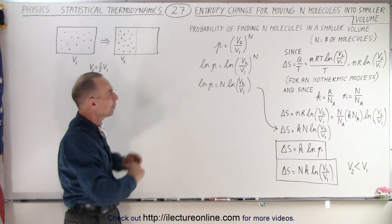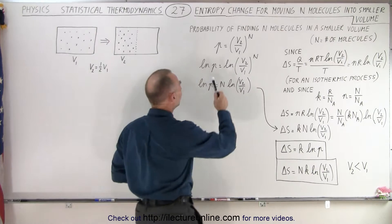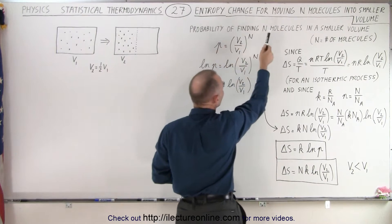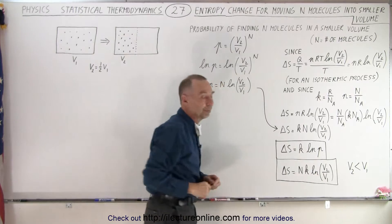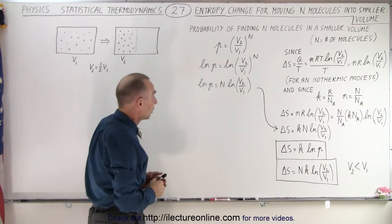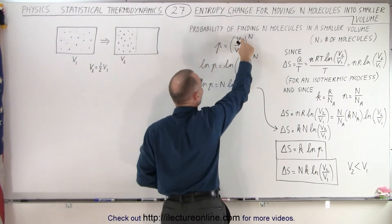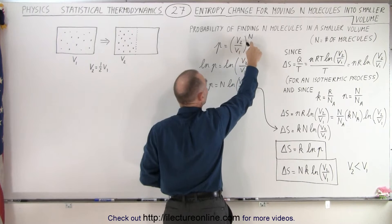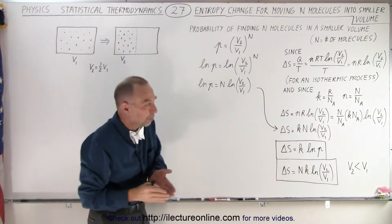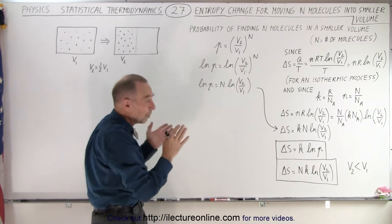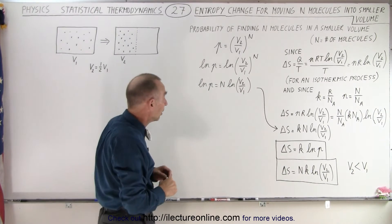Let's start from the beginning with the concept of the probability of finding N molecules in a smaller volume, N being the number of molecules. The probability will be equal to the ratio of the volumes raised to the N power. If there are just a few molecules — two or three — the probability is not that small of a number.